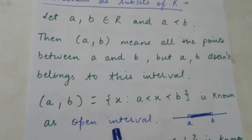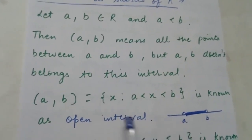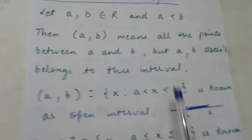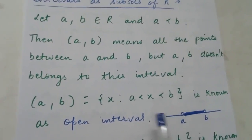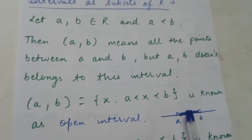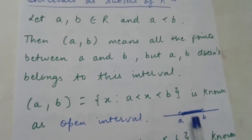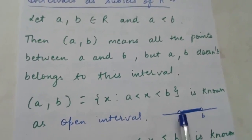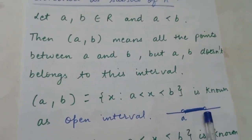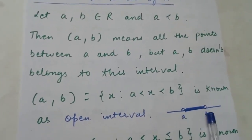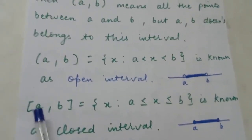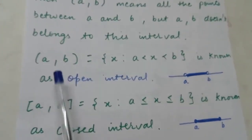On the number line, since a < b, we darken the line between a and b. The points between a and b are included, but a and b are represented with empty circles because they are not included in the open interval.